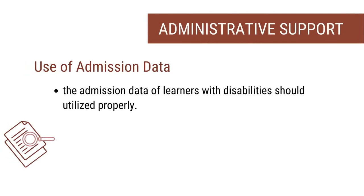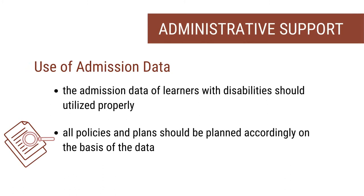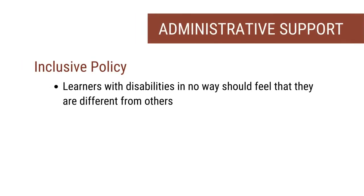Under administrative support, first of all, we should see that the admission data of all learners with disabilities should be properly utilized. All policies and plans should be developed on the basis of the data generated after admission. The institution or the university should have an inclusive policy. Learners with disabilities should in no way feel that they are different from others, because there should be no discrimination for such learners.